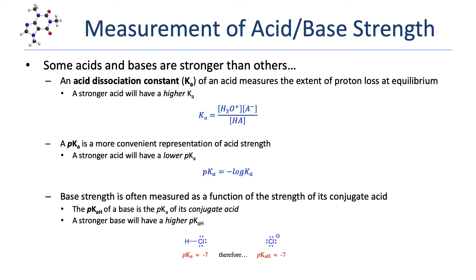The acid dissociation constant is a measurement of the extent of proton loss at equilibrium. The Ka expression is similar to the Keq expression — Keq is calculated by dividing the concentrations of the products by the concentrations of the reactants. In an acid-base reaction, the numerator would be the concentration of hydronium multiplied by the concentration of the conjugate base, divided by the concentration of the acid and base. For a strong acid, the concentration of the original acid is very small, making the Ka value very large. Strong acids will have very large Ka values.